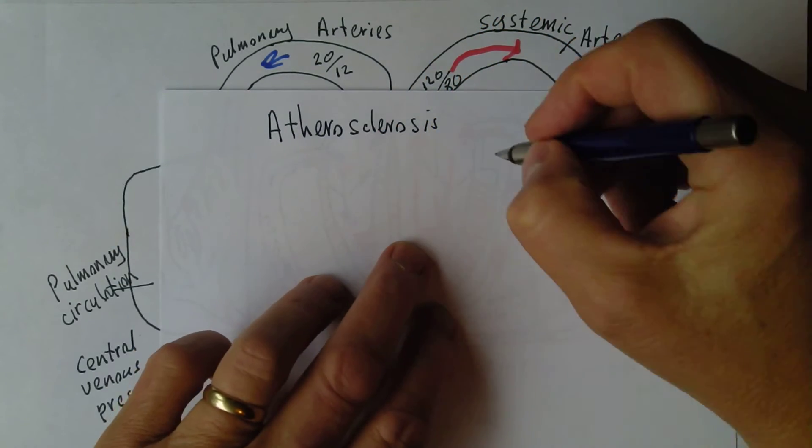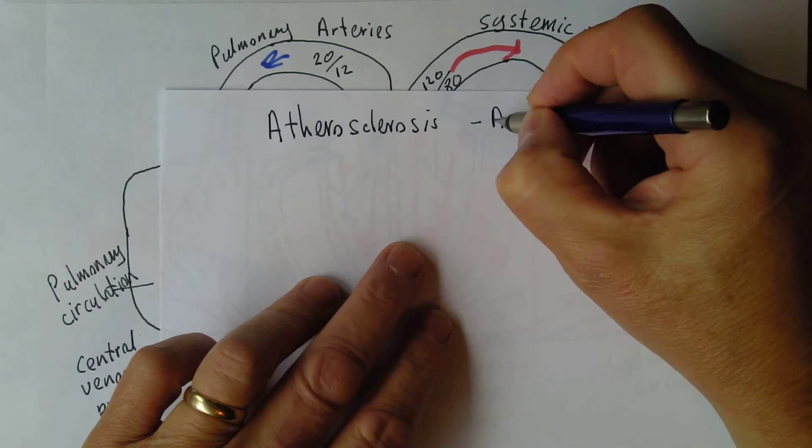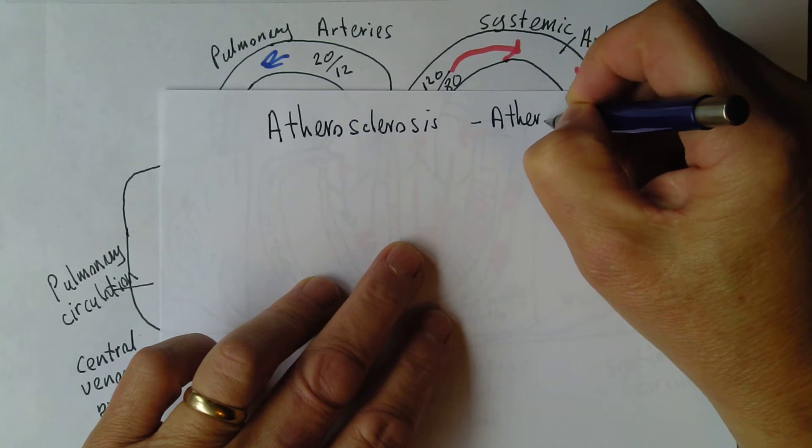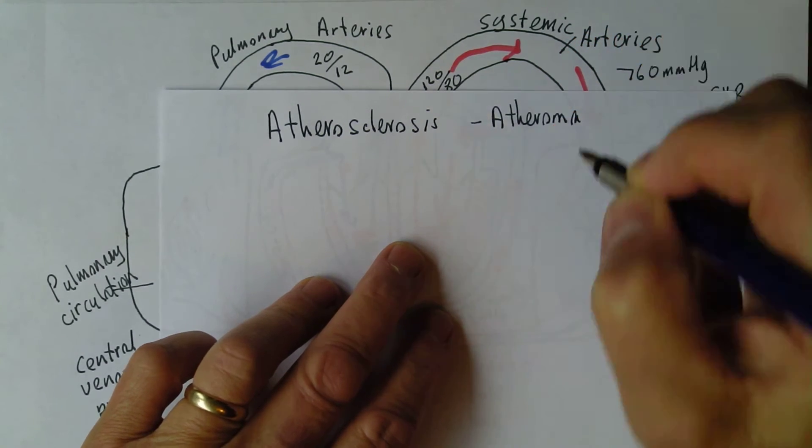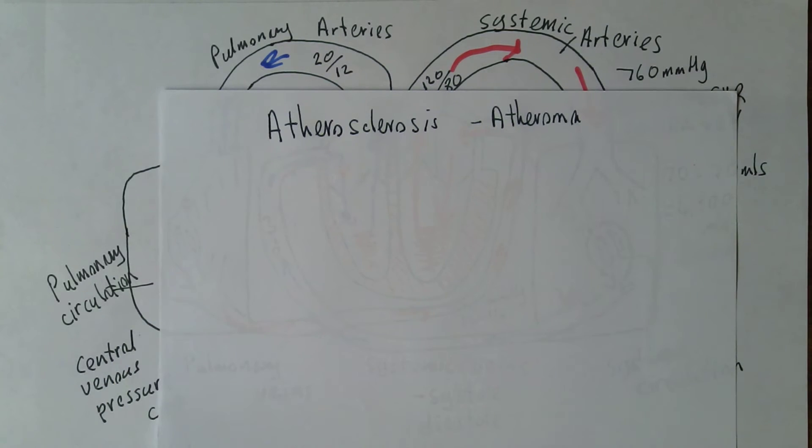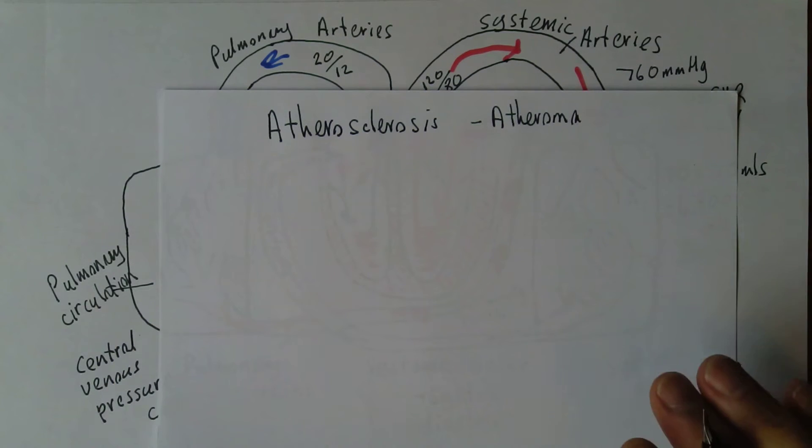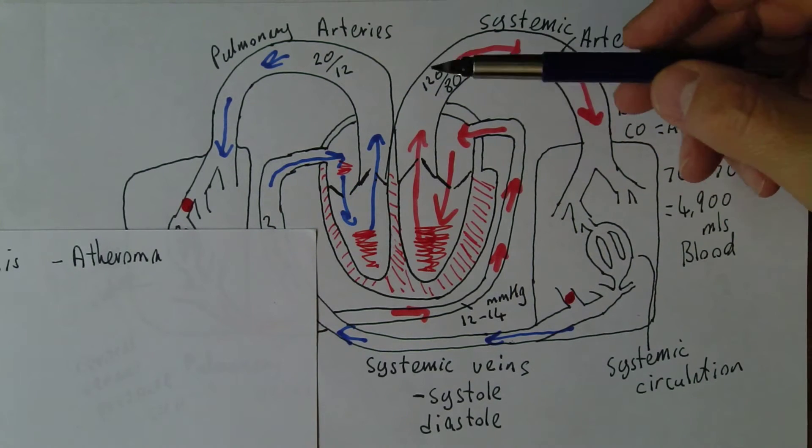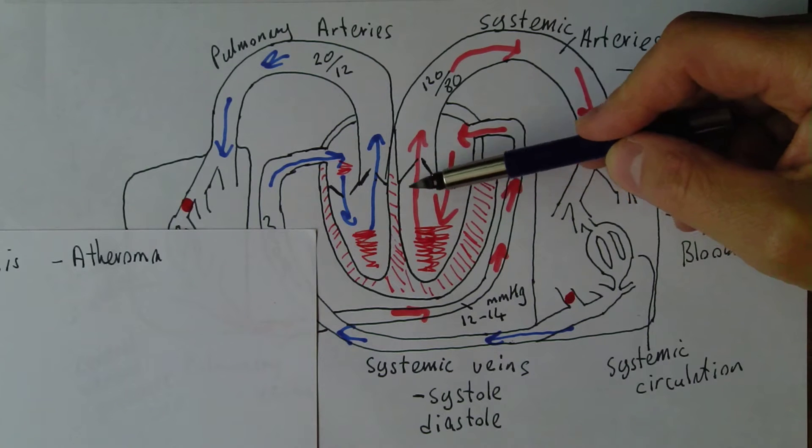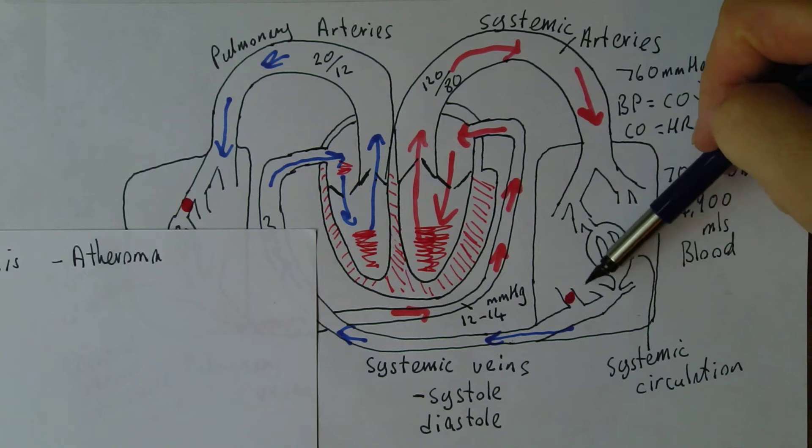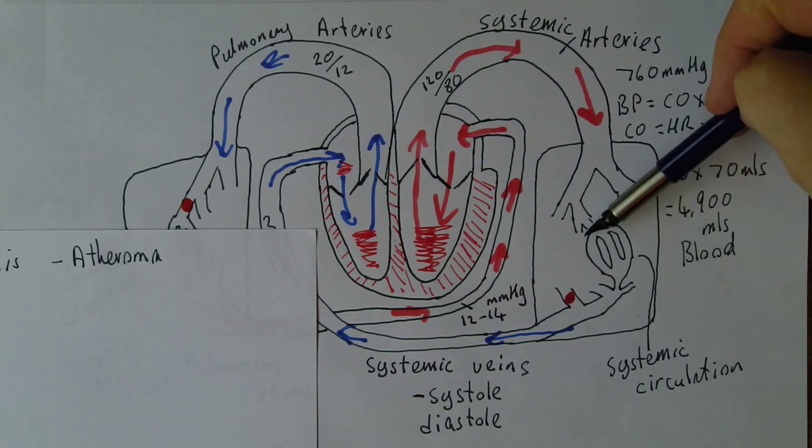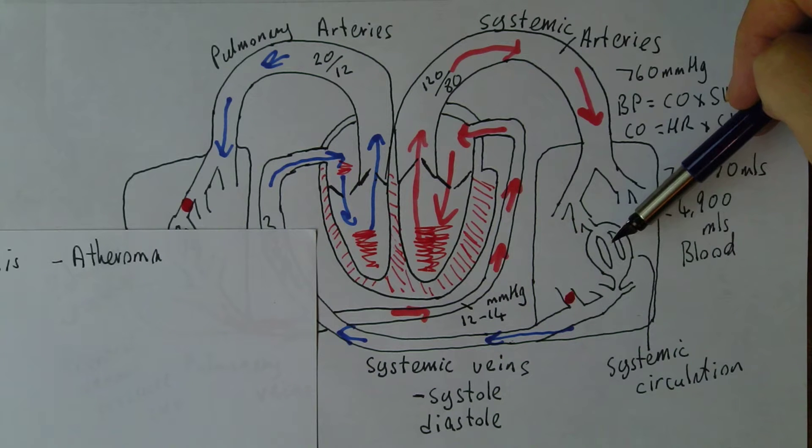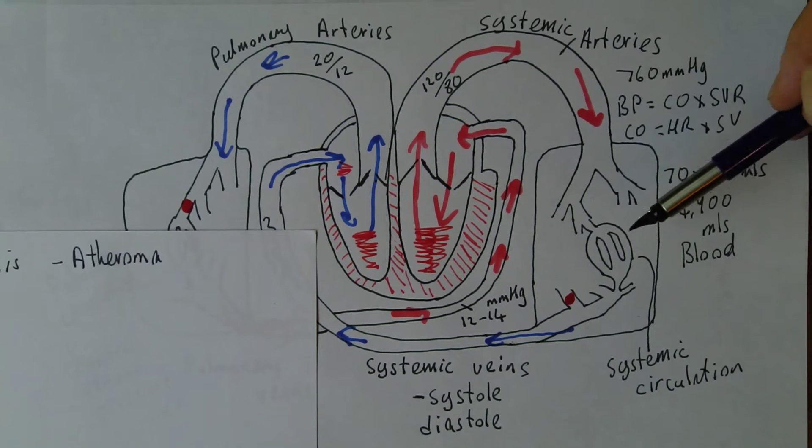Atherosclerosis. In atherosclerosis there's the accumulation of atheroma inside blood vessels. We're considering the systemic arteries here, the arteries going from the left ventricle to all tissues of the body. Atherosclerosis can affect a wide variety of these vessels.